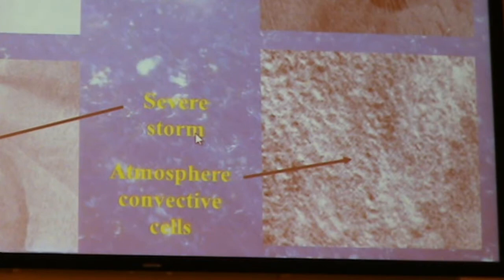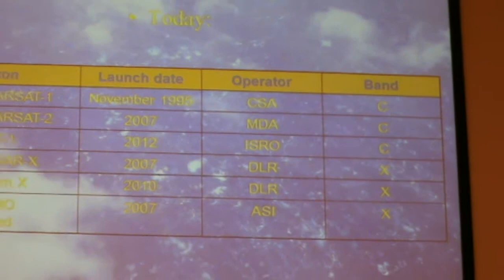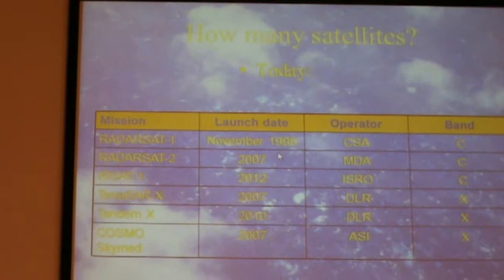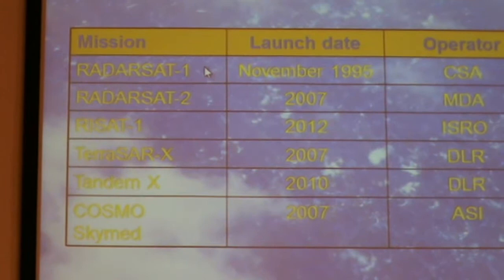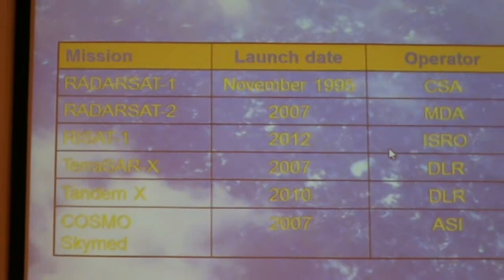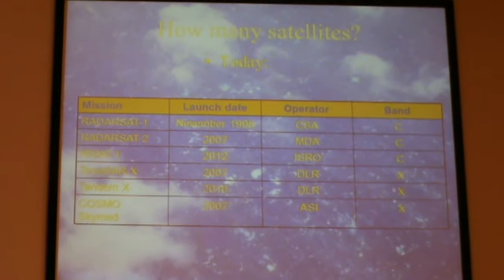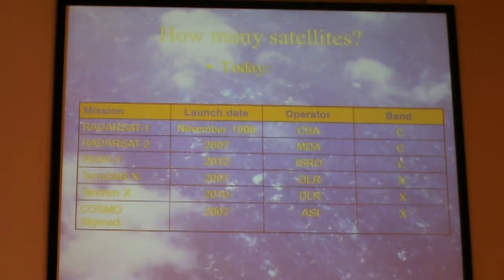Regarding how many SAR satellites exist today — it's like scatterometry: we have a set of satellites flying, but the number is quite larger than scatterometers. Right now we have Radarsat-1 and Radarsat-2 from the Canadian Space Agency, one Indian satellite, two German satellites, and one Italian — COSMO-SkyMed. They are not all in the same frequency band. Like scatterometers, some use C-band, which is less contaminated by rain, and some use X-band. The X-band wavelength is about 1–2 centimeters.